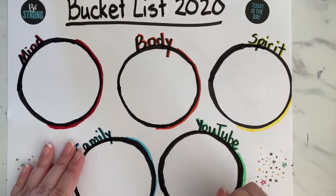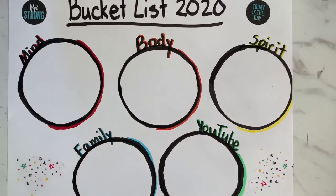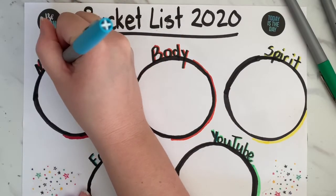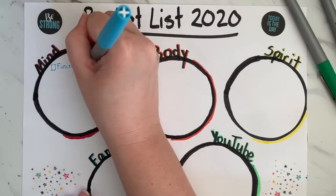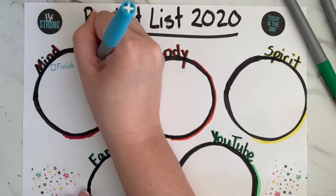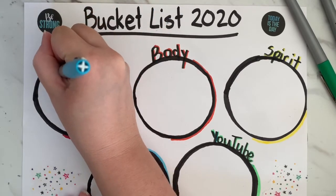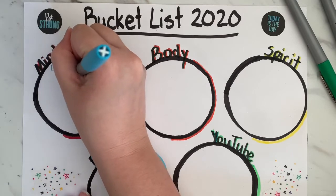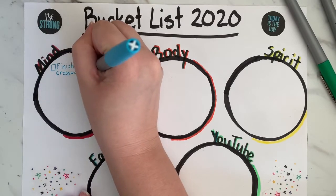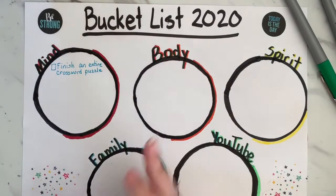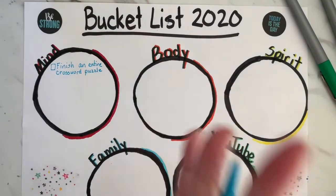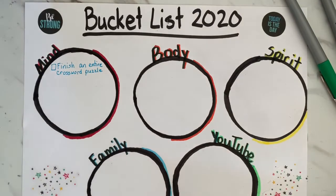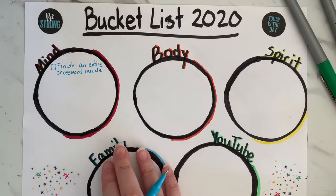Starting with mind — the first item I'm writing down is to finish a crossword puzzle. I really like crossword puzzles; I'm really good at starting them but I just can't finish them. So that's one thing I want to try: to finish an entire crossword puzzle.